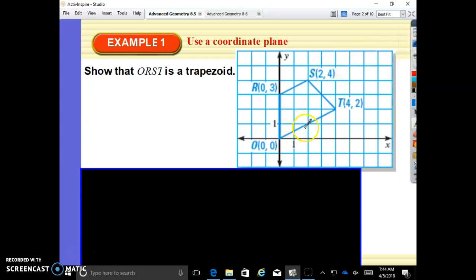All right, so example one, show that ORST is a trapezoid. Okay, so what do we know about a trapezoid? A trapezoid has exactly one pair of parallel sides. We need to prove that segment RS is parallel to segment OT. So let's see what their slopes are. We are rising one, running two. This is a slope of one half.